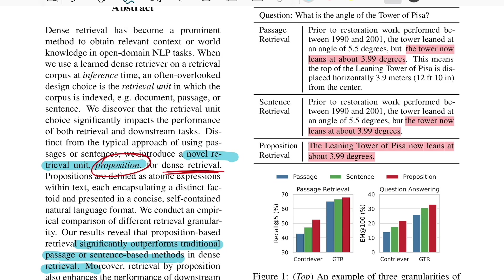Choosing the right chunk size — whether that should be passage, sentence, or at token level — is really an issue for all developers building question answering systems, or generally in the LLM space working on RAG. So if propositions as your retrieval unit works well, which is what they're claiming in the results, then that makes our life much much better.